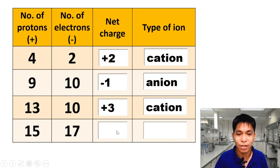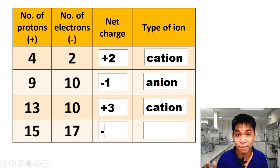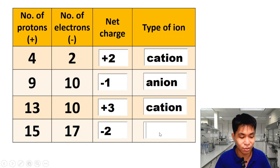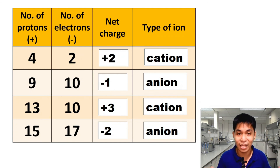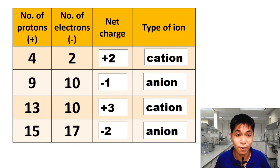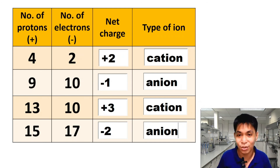Last one: 15 protons or 17 electrons — electrons are greater by 2. The net charge is negative 2, so the type of ion is an anion. That is how we use the number of protons and electrons to identify the net charge and type of ion.